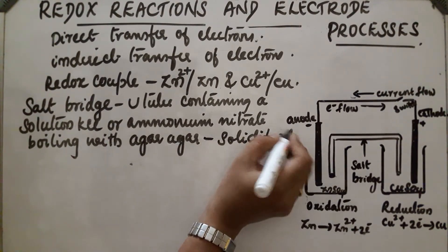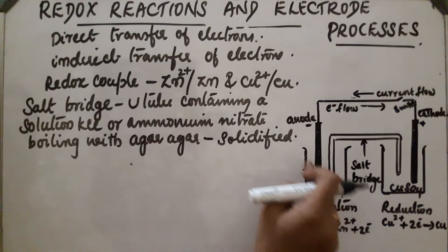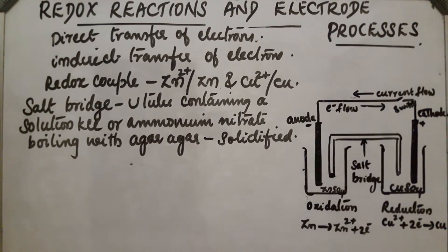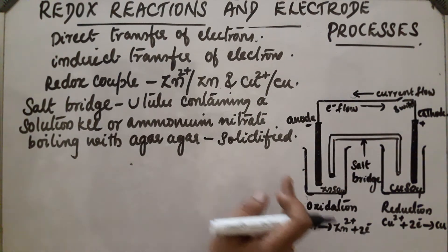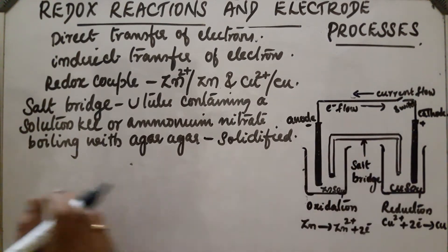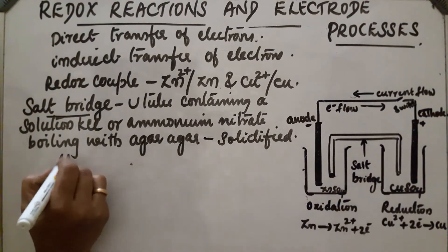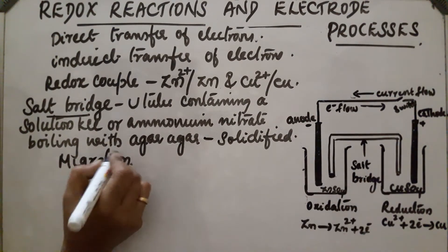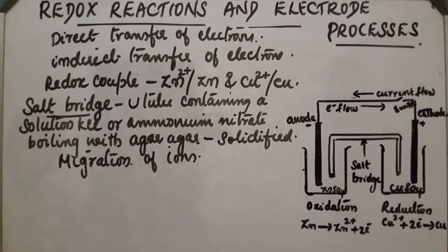Electrons flow from zinc to copper. At the same time, current flows in the opposite direction, and the electrical circuit is completed due to the salt bridge. The salt bridge also prevents the two solutions from mixing together, and through it the migration of ions takes place.